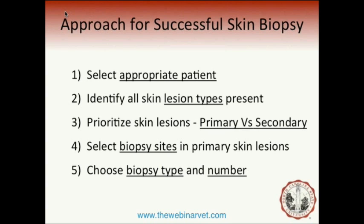If we don't find the right sites in our primary skin lesions, we'll misapply our biopsy and end up with a nonspecific result. It's also important that our biopsy type and number match our problem. Sometimes choosing the wrong biopsy type leads to a suboptimal result, and the number of biopsies is always critical — your pathologist is always asking for more, and we'll see why.